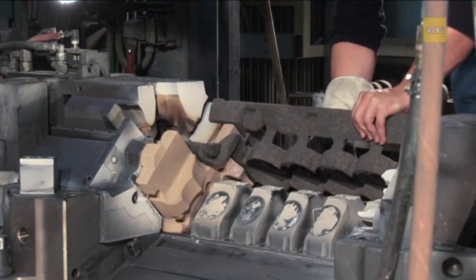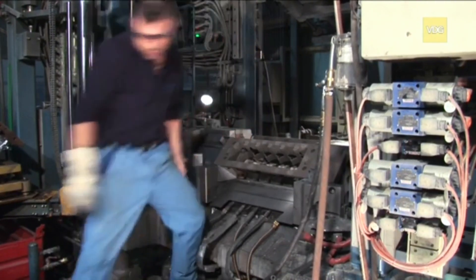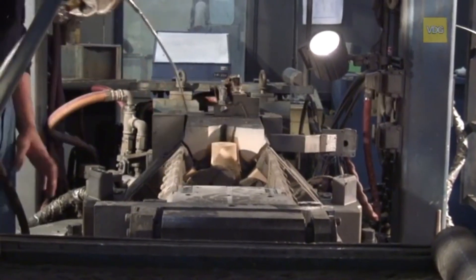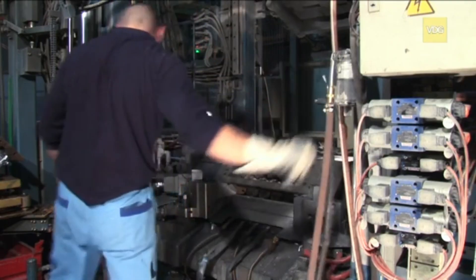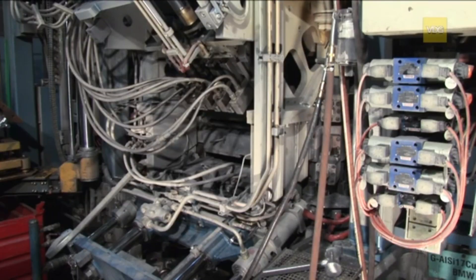Subsequently, the two water jacket cores and the fourth required sand core are placed. A final blowout of the mold prevents residual sand from contaminating the casting. Once the mold is closed and locked, the casting process is initiated.